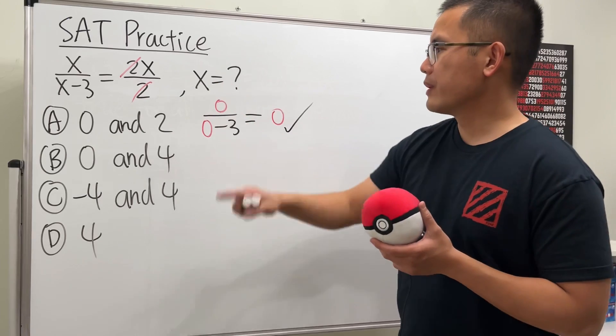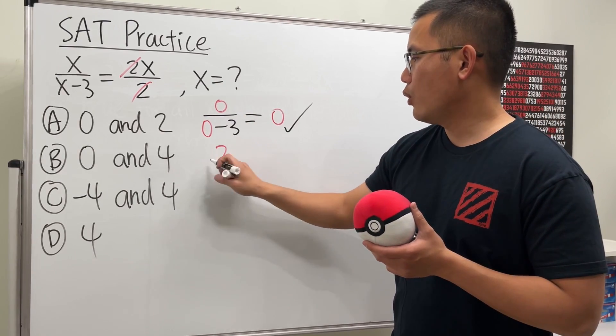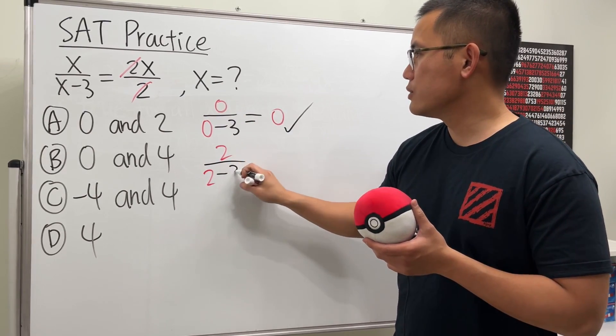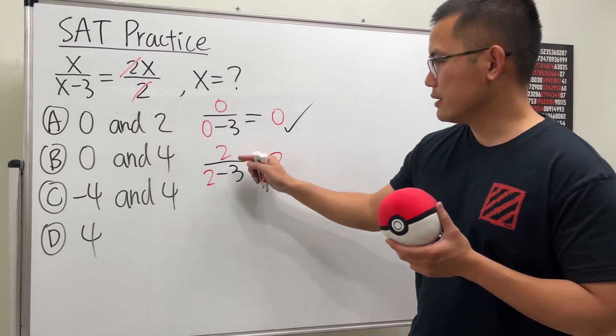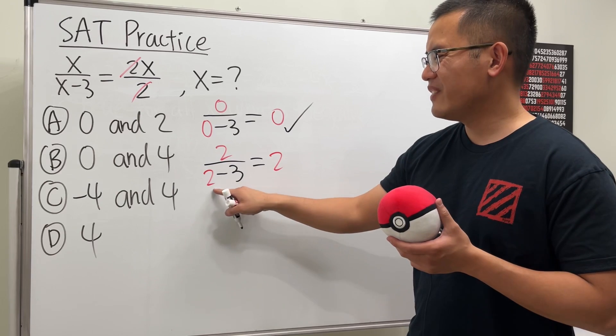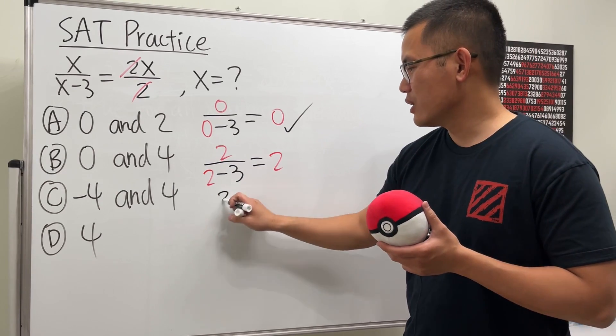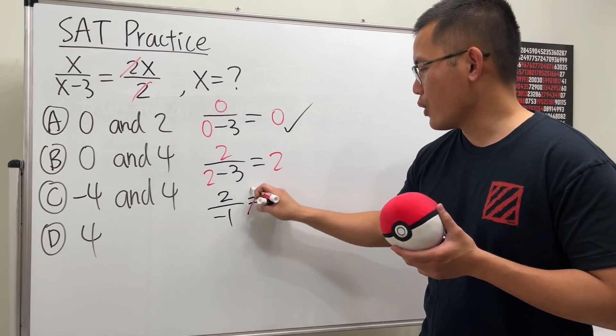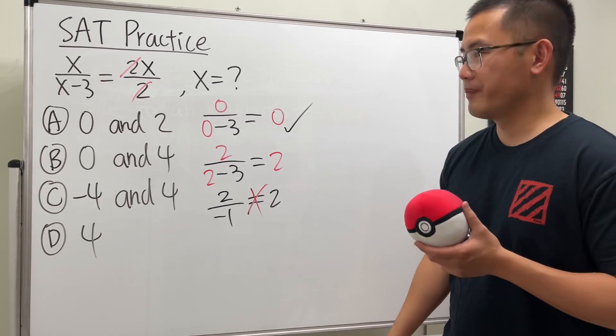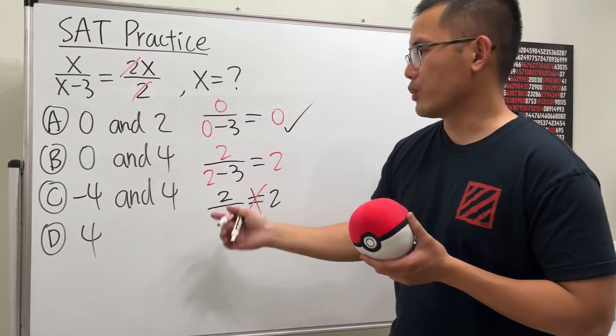So let's check two. If we have two over two minus three, do we end up with two right here? Be really careful, this is two and this is negative one, right? This is two over negative one. This does not give us two, so it's a no. So two does not work, so we know the answer is B already.